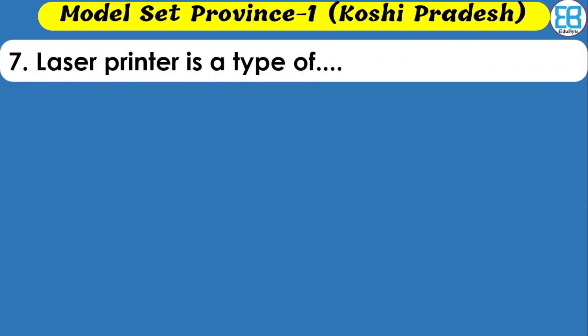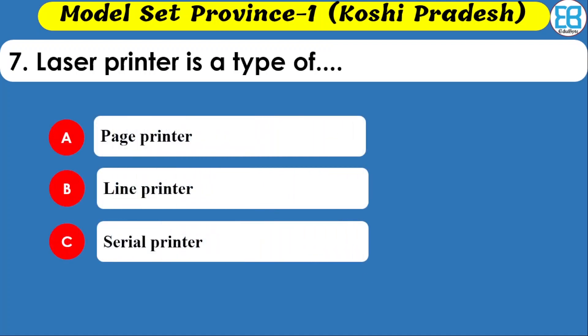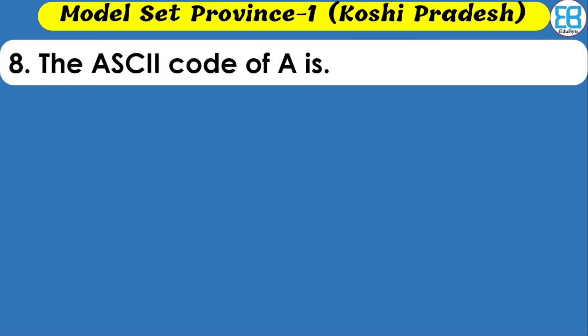Laser printer is a type of non-impact printer. Options include line printer, serial printer, and dot matrix printer. The correct option is that laser printer is a non-impact, page-based printer.